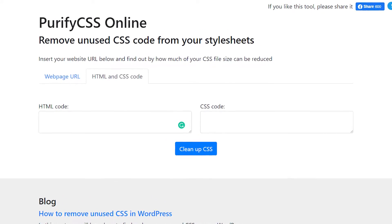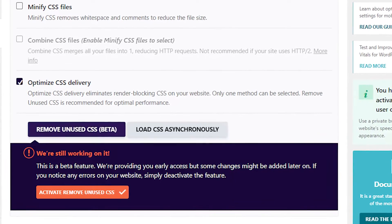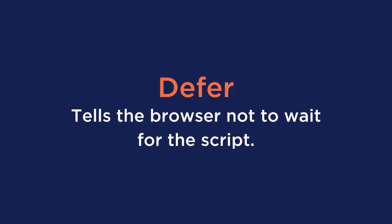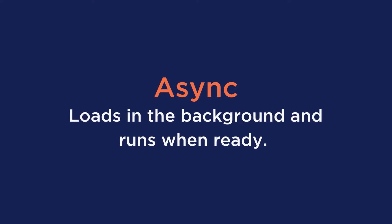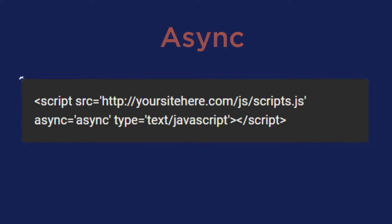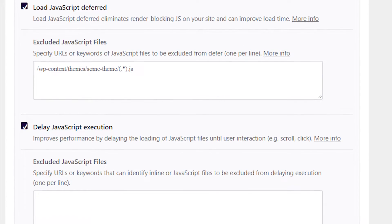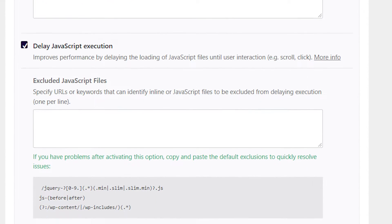To manually remove unused CSS, you can use a tool like PurifyCSS. Or for the easiest method, the plugin WP Rocket will do it for you in just one click. For delaying or deferring your JavaScript, you can apply either two attributes to the script: defer or async. Defer tells the browser not to wait for the script, while async loads in the background and runs when ready. Here's an example of the script tag with the async attribute, and here's one with the defer attribute. WP Rocket will take care of this for you in just a few clicks. Both techniques aim at eliminating render blocking resources and avoiding chaining critical requests.